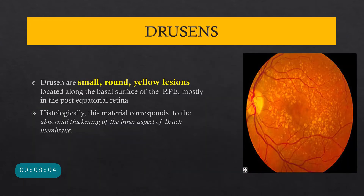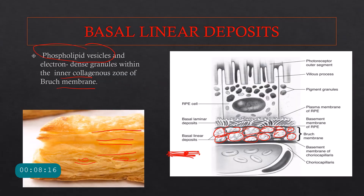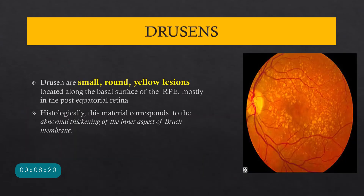Drusen are very important in age-related macular degeneration because they are something we can see clinically — small yellow round lesions located along the basal surface of the RPE. The basal linear and basal laminar deposits are visible only under electron microscope. Histologically, the material in drusen corresponds to these deposits and represents a thickening of the inner collagenous zone of Bruch's membrane.